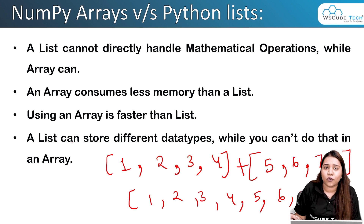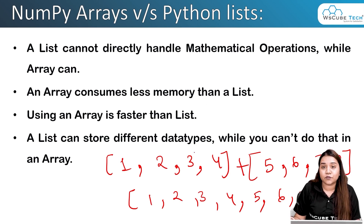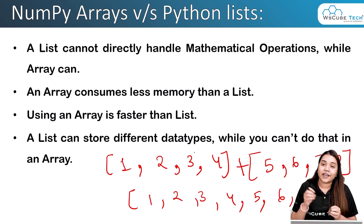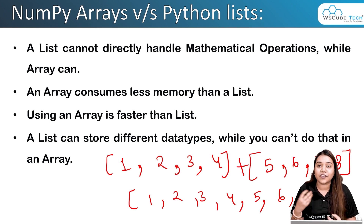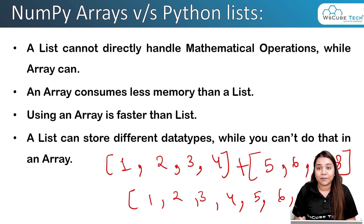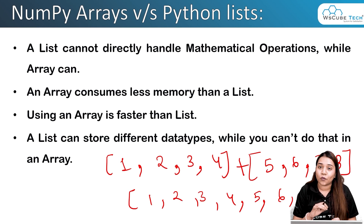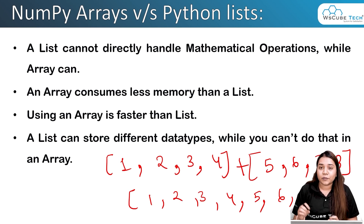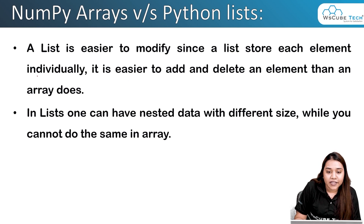A list can store different data types while an array cannot. This is one con of arrays — a list can store strings, floats, or integers together, while in an array you can only store one single data type. If it is a string, there will only be strings; if there are numbers, there will only be numbers.